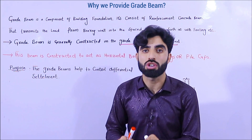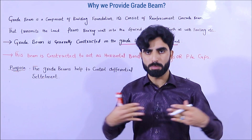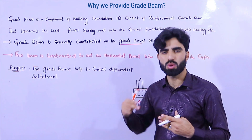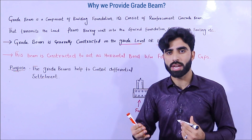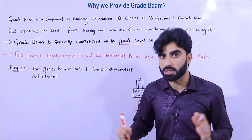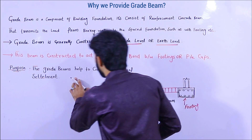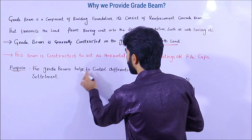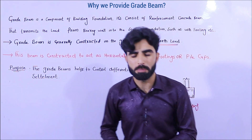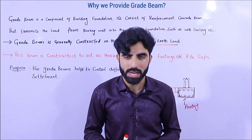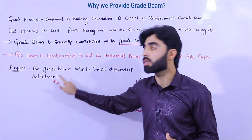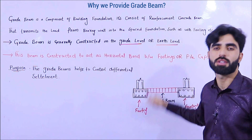Grade beam is stronger than plinth beam because it makes a good bond between footings and pile caps. We can also construct a wall above it, so it supports the bearing wall load and transfers it to the foundation. Additionally, grade beams help control differential settlement — if the soil has low bearing capacity, it is very important to provide a grade beam to control differential settlement.